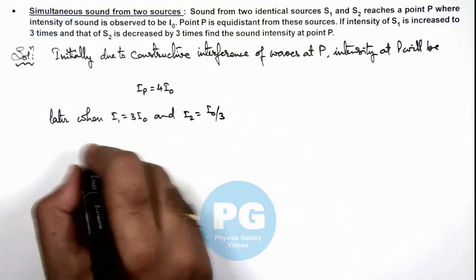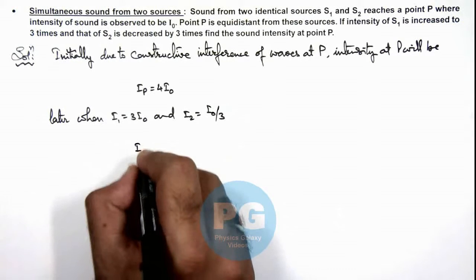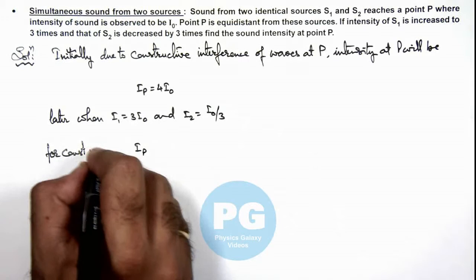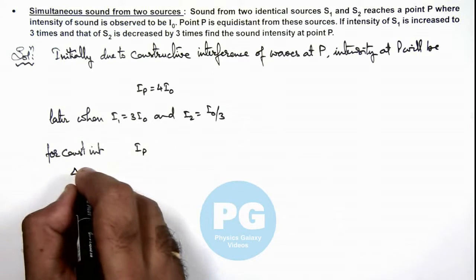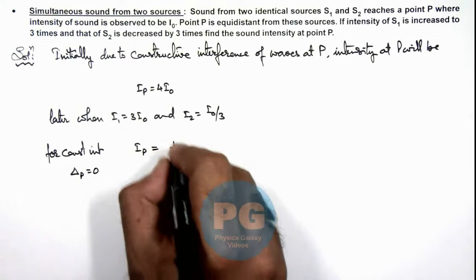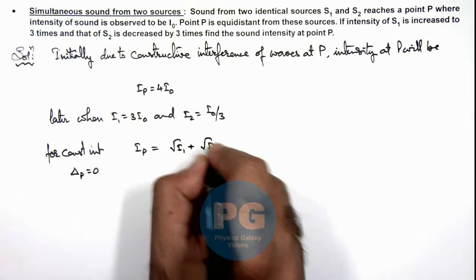Intensity at P again, for constructive interference, as path difference due to the two sources at point P is given as zero, we use (√I₁ + √I₂)² whole square.